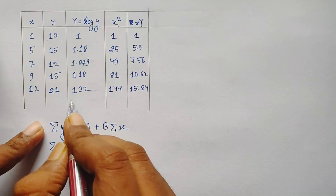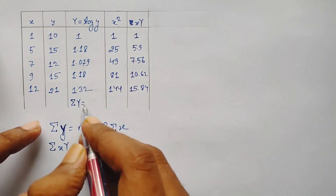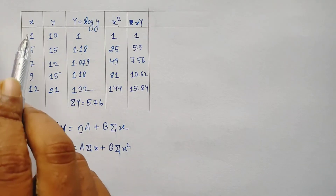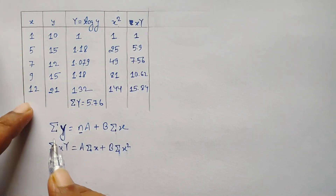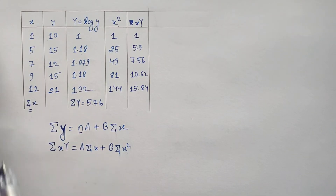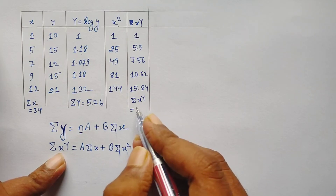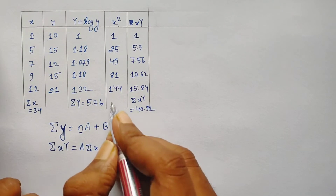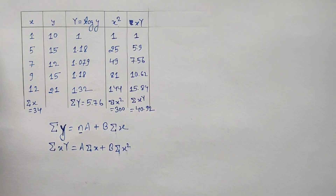Now we compute the summation values from the table. Summation Y equals 5.76. The number of terms n equals 5. Summation x equals 34. Summation xY equals 40.92. Summation x squared equals 300.